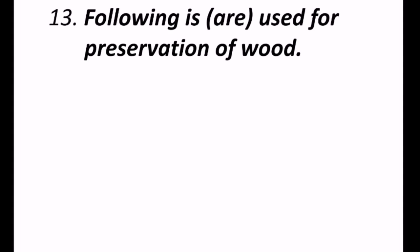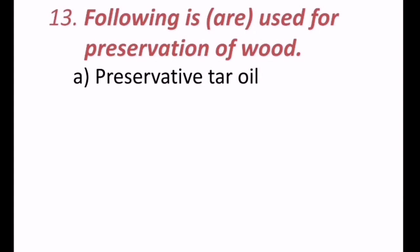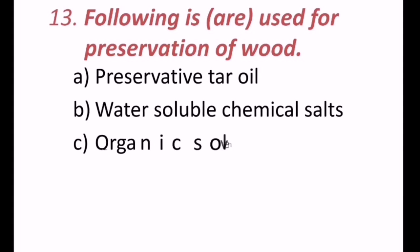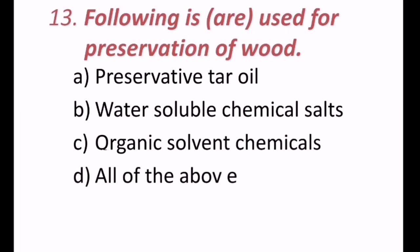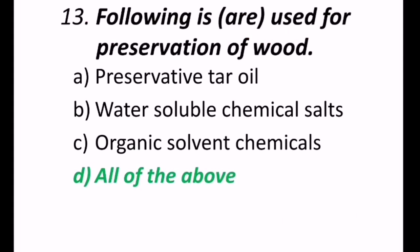13th question, following is or are used for preservation of wood. So to preserve the wood, what is used? That may be preservative tar oil, water soluble chemical salts, organic solvent chemicals, or all of the above. Here, all are used to preserve the wood. Preservative tar oil, water soluble chemical salts, organic solvent chemicals. Hence, D is the correct answer.